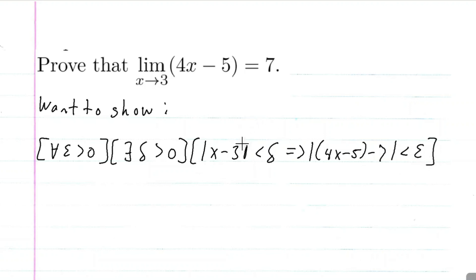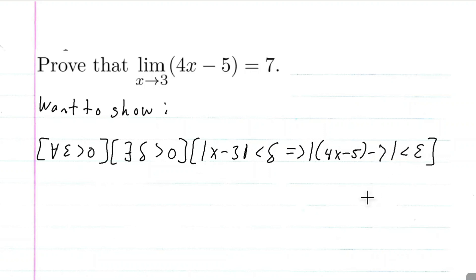Notice where I got these numbers. x minus 3 — x approaches 3 — so x minus 3 is less than delta. And 4x minus 5 minus 7, that's where I got those, is less than epsilon. So this is what I want to show.